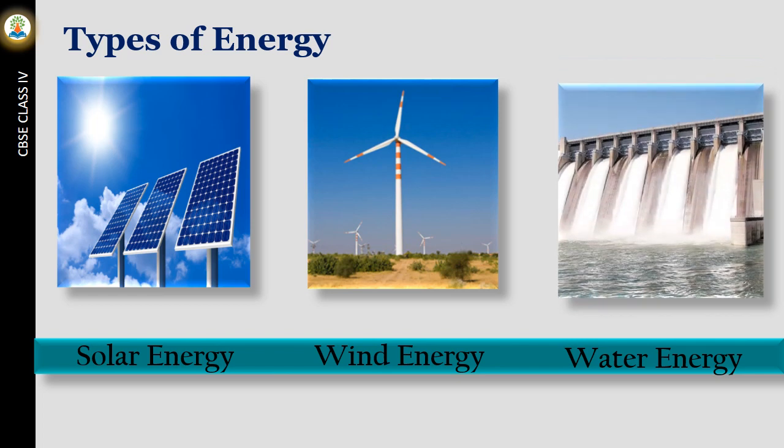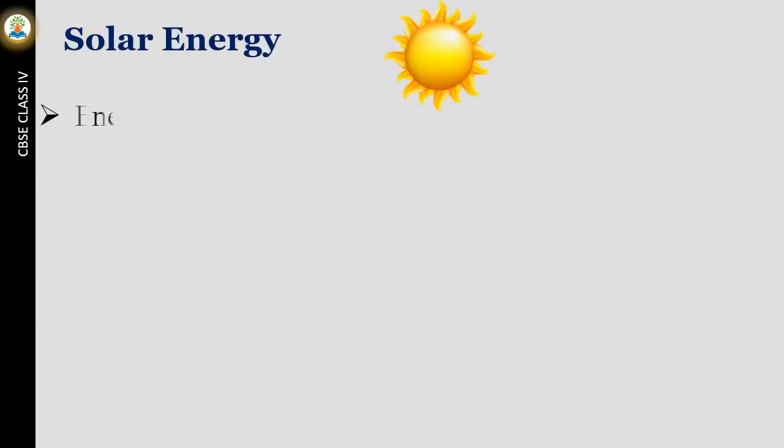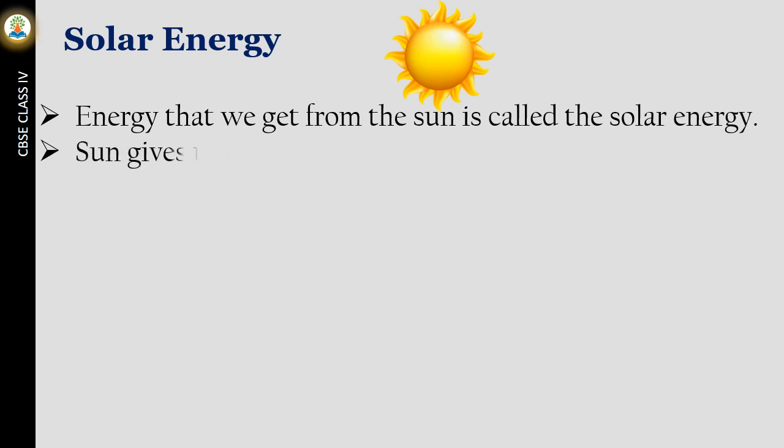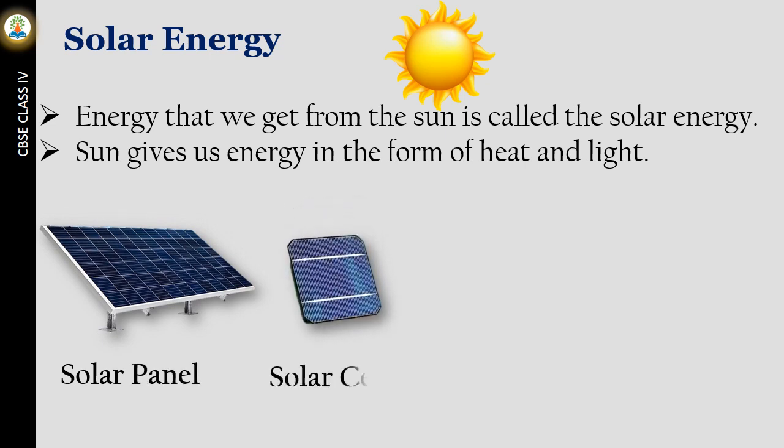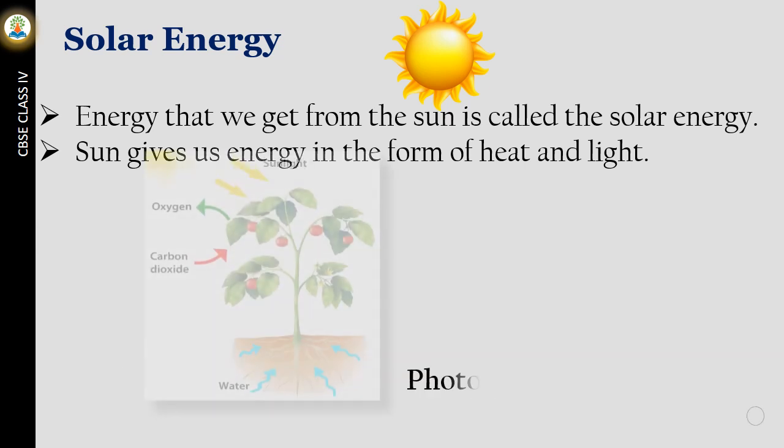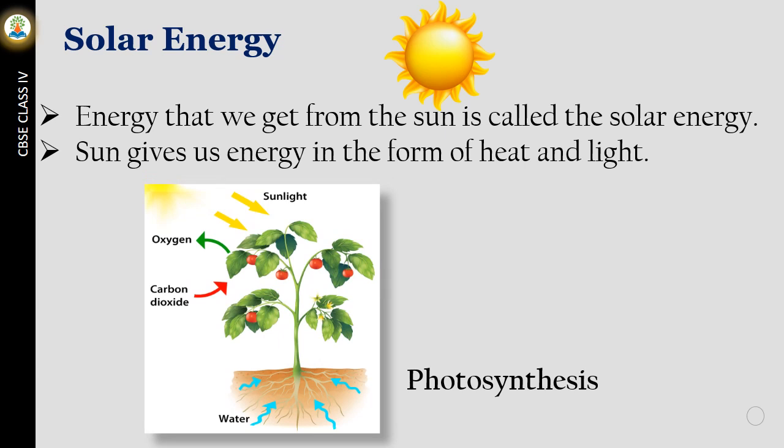Let's learn about solar energy, wind energy and water energy. Energy that we get from the Sun is called the solar energy. Sun gives us energy in the form of heat and light. We convert solar energy into electrical energy with the help of a solar panel or a solar cell. Plants use solar energy to carry out photosynthesis to make food in their green leaves.